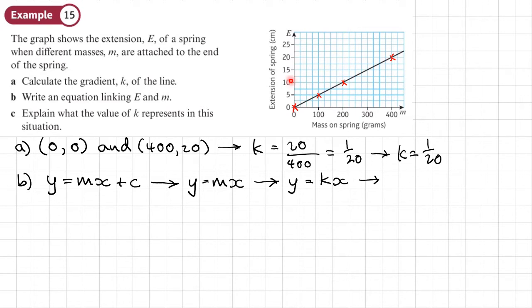So y, on the y axis, we've got the letter e, so we'll use e there, equals k, which is 1 over 20. And on the x axis, we have the letter m, so we'll put an m there. So e equals 1 over 20 m.